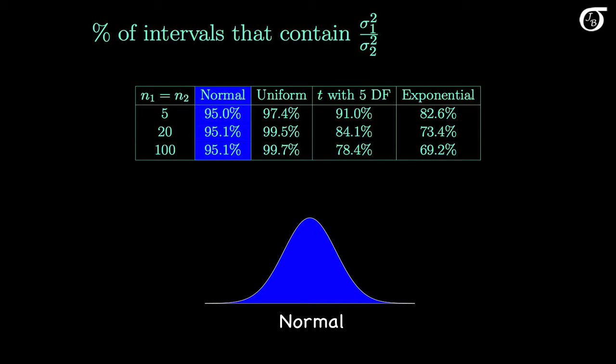First we'll be sampling from normal distributions, so the normality assumption is true. We can see that regardless of the sample sizes, the percentages in the blue column of the table are all very close to 95%. Theoretically the procedures are working perfectly here, and the percentages are equal to exactly 95%. But we're dealing with the results of a simulation of 100,000 intervals, so there is some chance and variability involved.